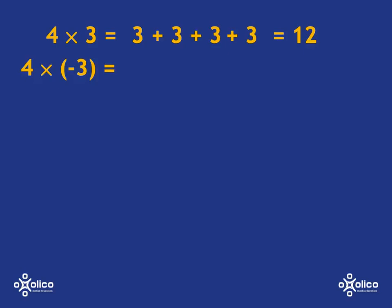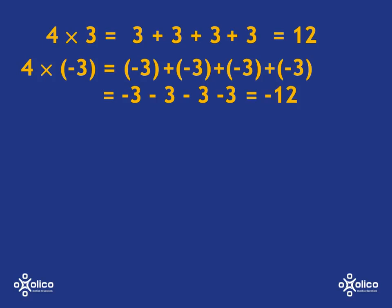Now, 4 multiplied by negative 3, well, that's just going to mean 4 lots of negative 3. And that, we know, is just negative 3, subtract 3, subtract 3, subtract 3. In other words, you're at negative 3 and you keep on going further and further down. You're going to end up at negative 12.